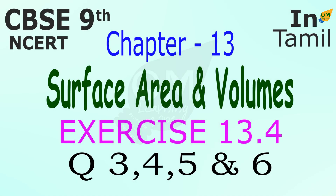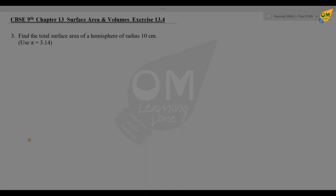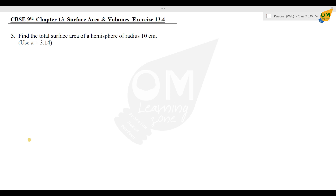You are now looking at the 9th Standard NCE or CBC Syllabus Chapter 13 Surface Area and Volume. That is exercise number 13.4, third sum. Find the total surface area of a hemisphere of radius 10 cm and use pi equal to 3.14. In this case, pi is equal to 3.14, that is 22 by 7.